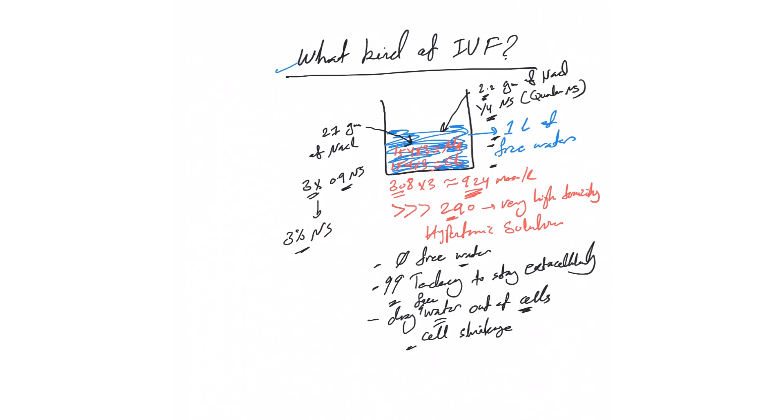The 154 divided by four gives you around 35, 36, something like that. So the quarter normal saline, on the other hand, gives you a total osmolality of around 77 milliequivalents. The quarter normal saline is very hypotonic. 77 is way smaller than 290, so the amount of free water is high. Each liter of quarter normal saline has around 750cc of free water.